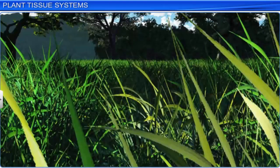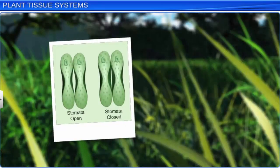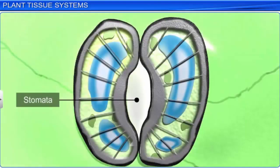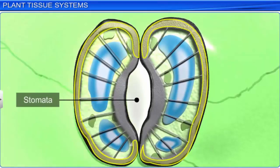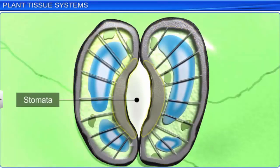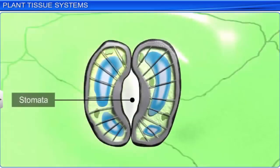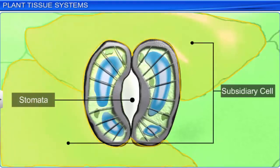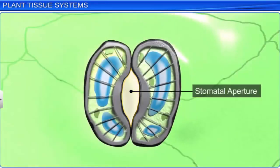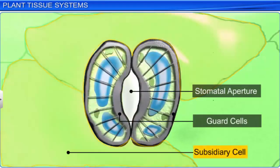In grasses, the guard cells are dumbbell-shaped. The outer walls of the guard cells, which are away from the stomatal pore, are thin, while the inner walls towards the stomatal pore are very thick. When the epidermal cells associated with the guard cells become specialized in shape and size, they are known as subsidiary cells. The stomatal aperture, guard cells, and the surrounding subsidiary cells are collectively called the stomatal apparatus.